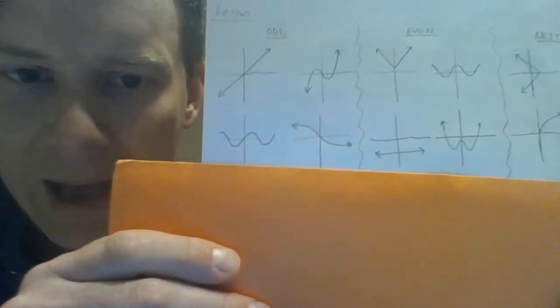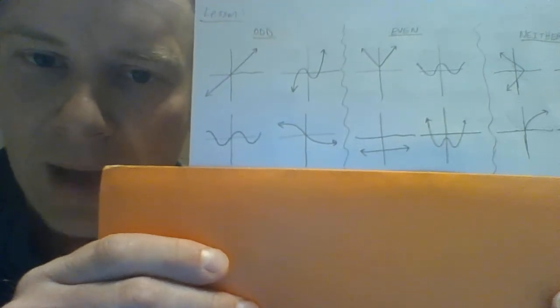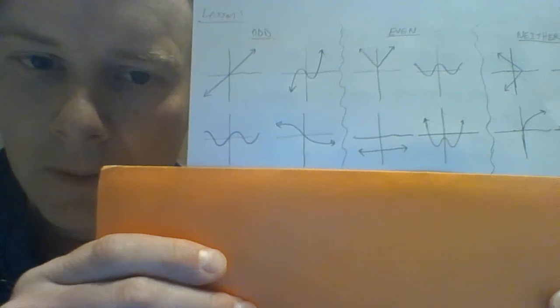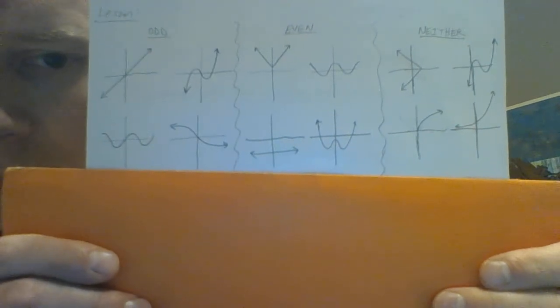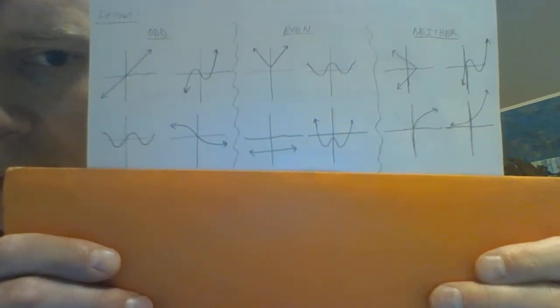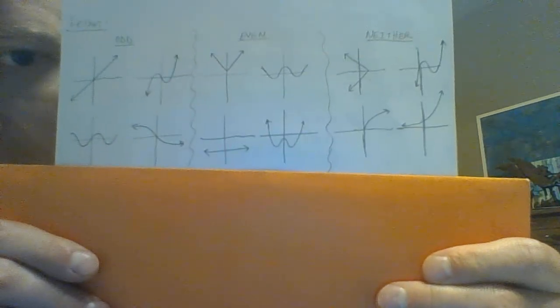Now we're going to look at even and odd functions. I'm going to hold some things up — it'll be faster than writing them all out. I've given you four different functions that are all examples of odd functions, and I want you to look for the pattern. Likewise, there are four examples of even functions and four examples that are neither.